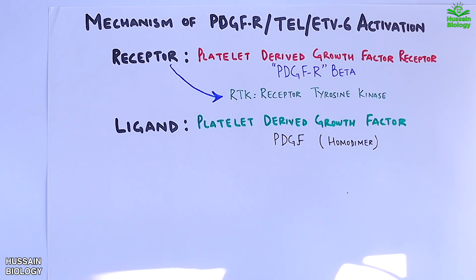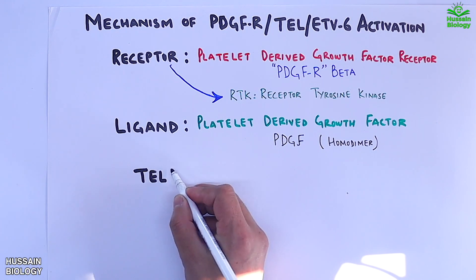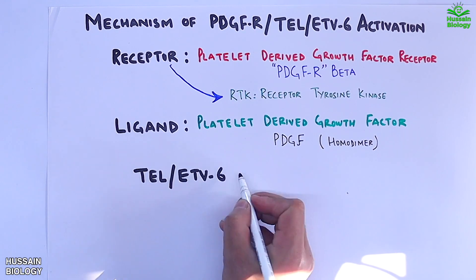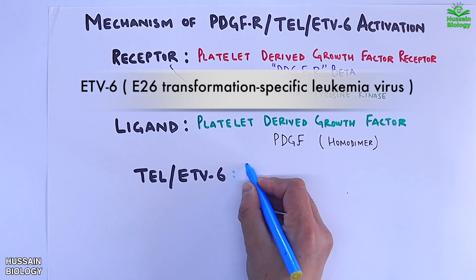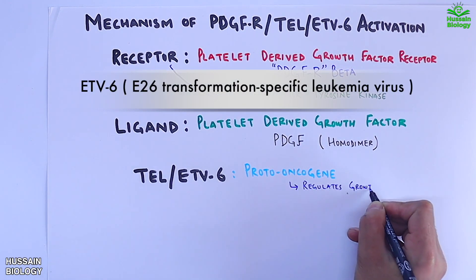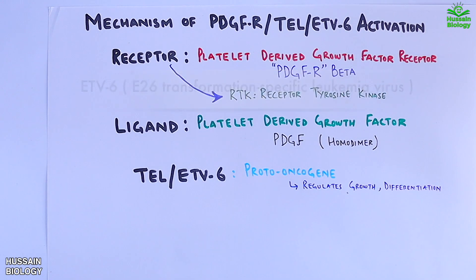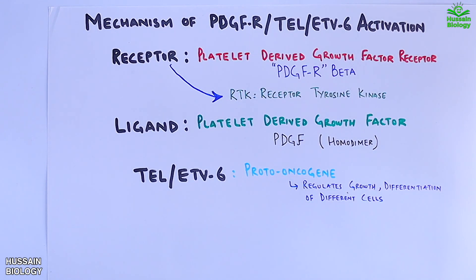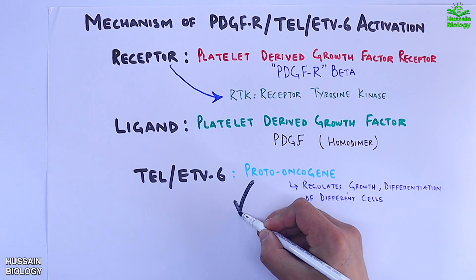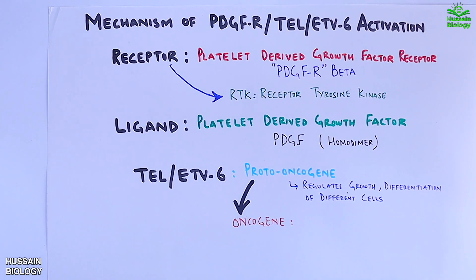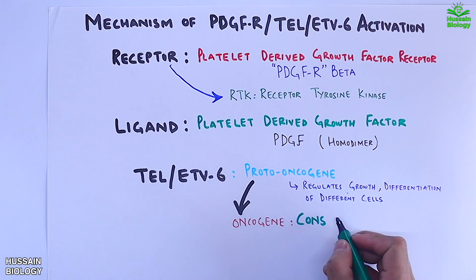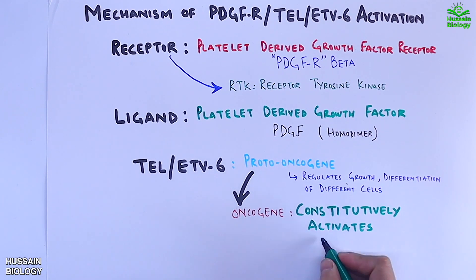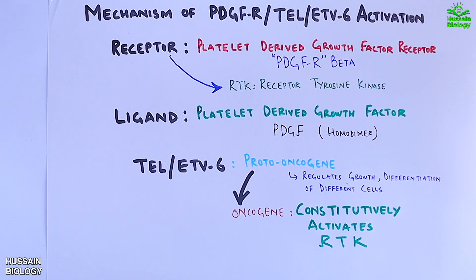We have an important gene for this mechanism: the TEL gene, or ETV6 gene. It is a proto-oncogene that regulates growth, development, and differentiation of different cells. When this proto-oncogene transforms into an oncogene, it then constitutively activates RTK, which leads to malignancy.